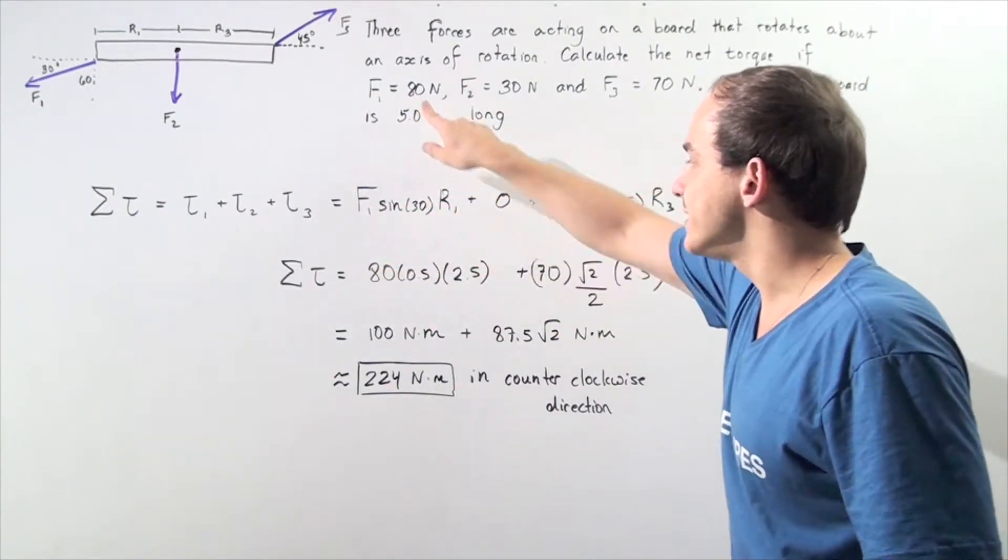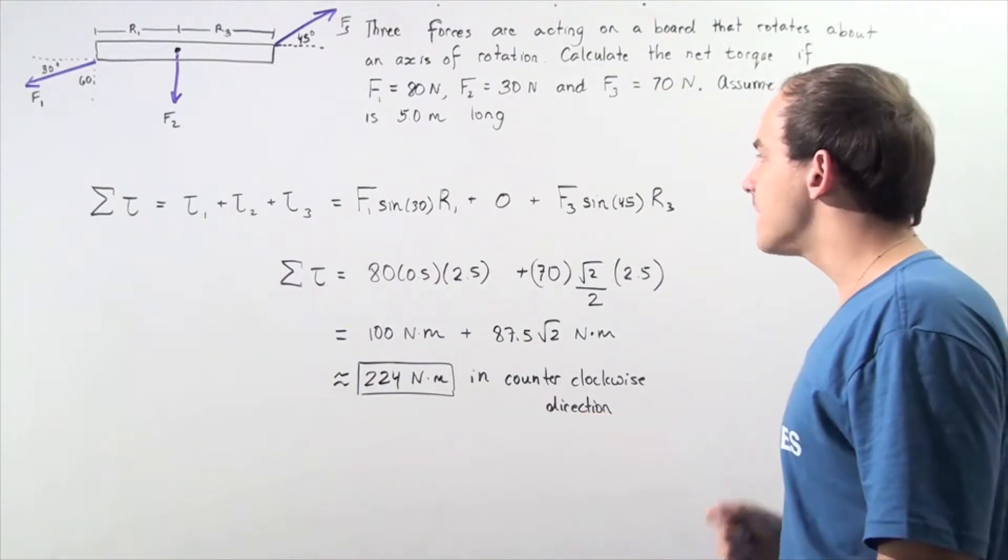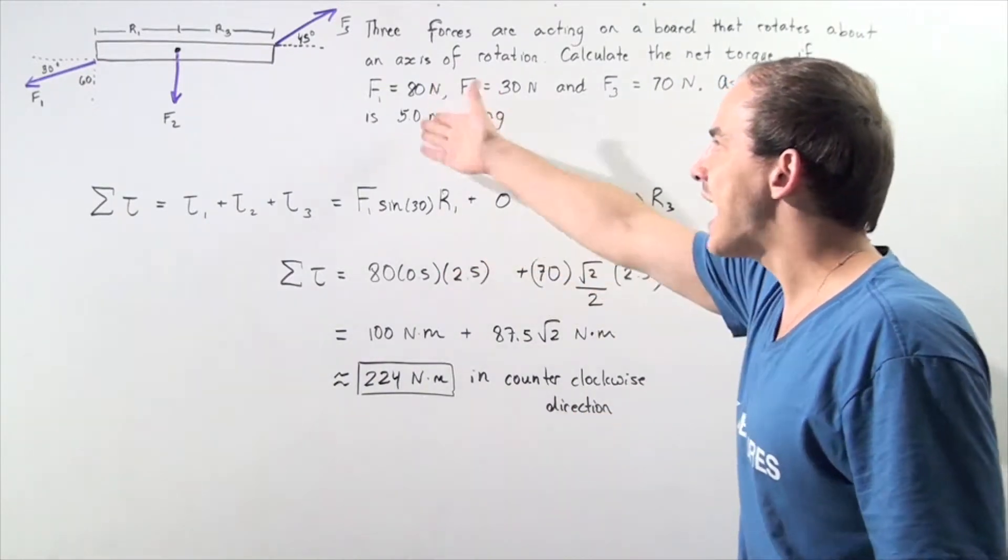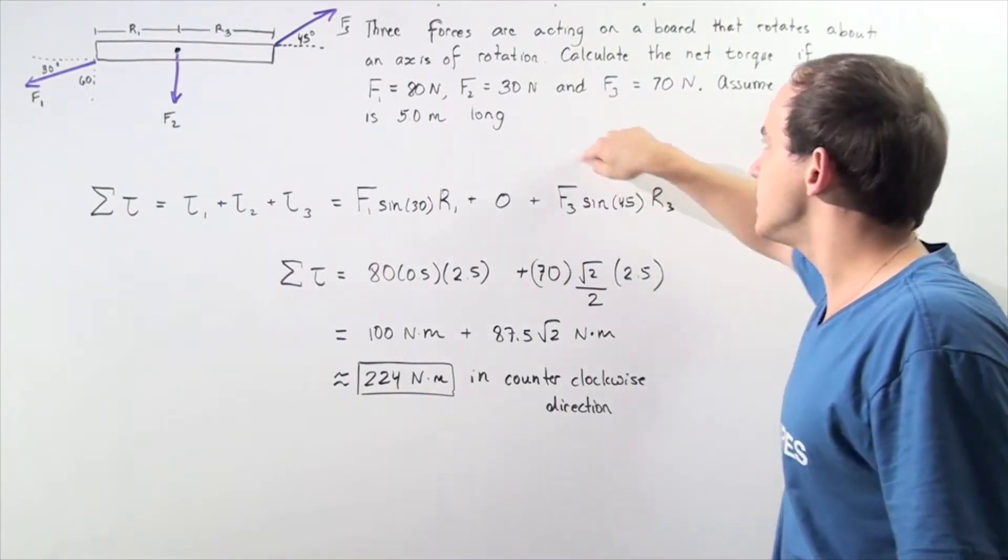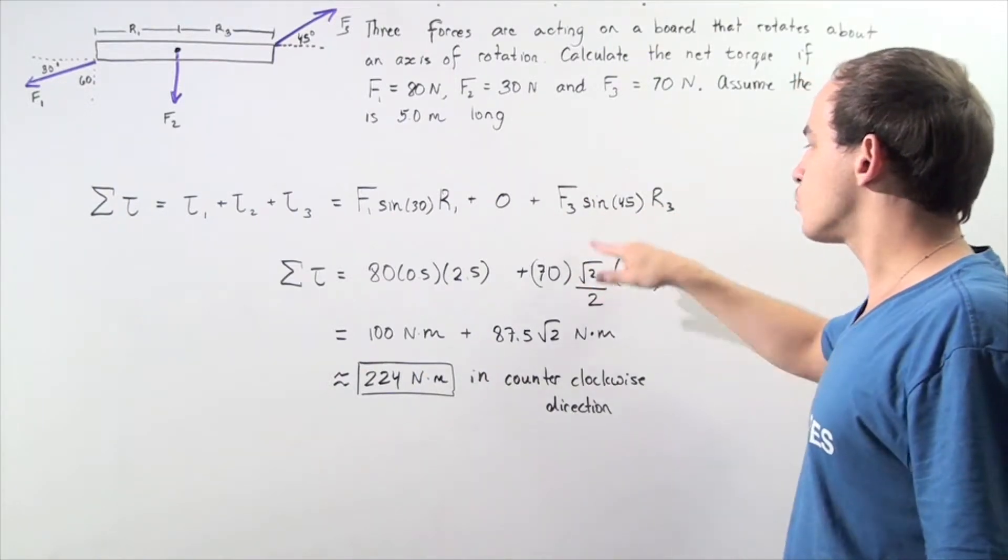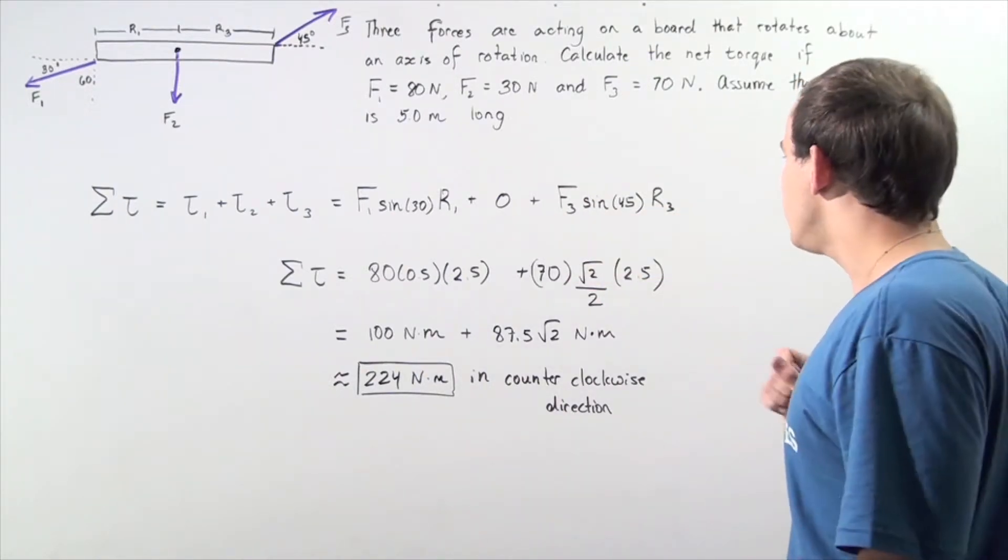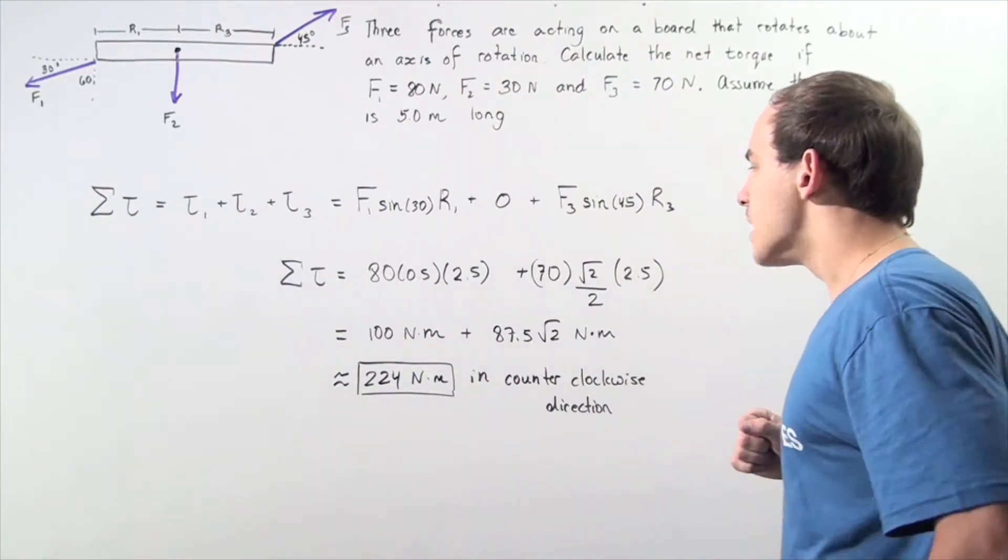We know what F1 is. It's 80 newtons. We know what sine 30 is. It's 0.5. We know what R1 is. It's half of 5, so 2.5 meters. We know what F3 is. That's simply 70. We know what sine of the angle 45 is. That's radical 2 divided by 2. And we know what R3 is. It's simply 2.5.